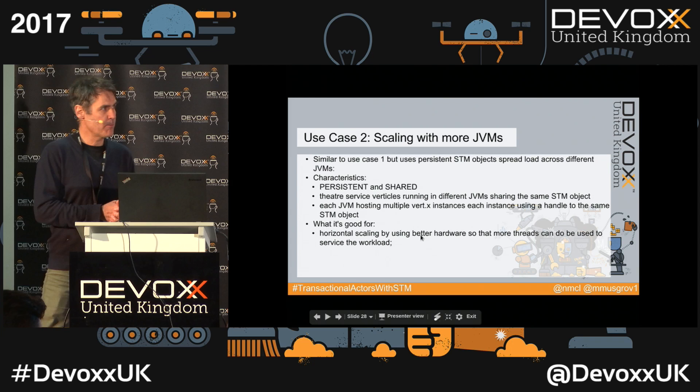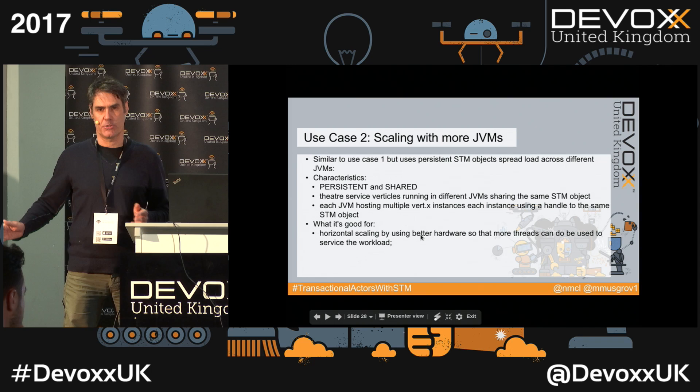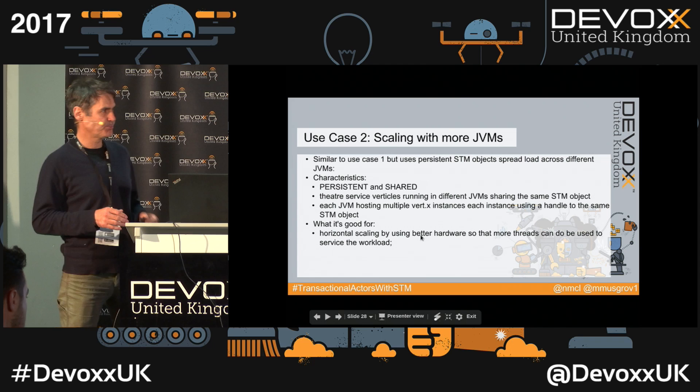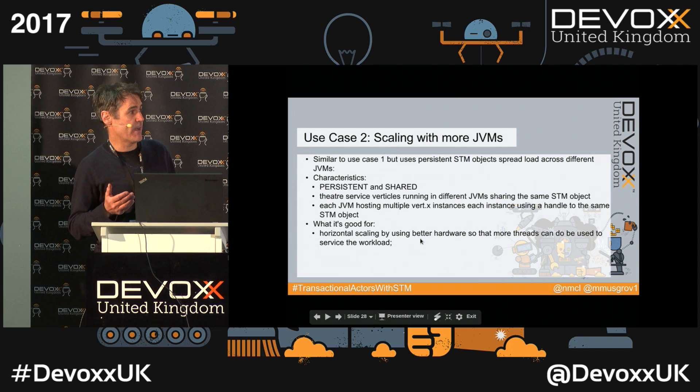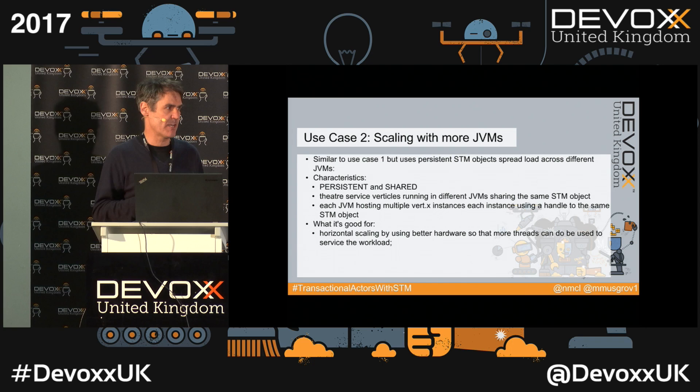The second demo is very similar to the first, except instead of volatile STM objects it uses persistent ones. With persistent objects you can share memory across different address spaces — you can spin up multiple JVMs and they'll all see the same object. An example use case is scaling out your service across multiple nodes or multiple JVMs, all sharing the same data with consistent changes.